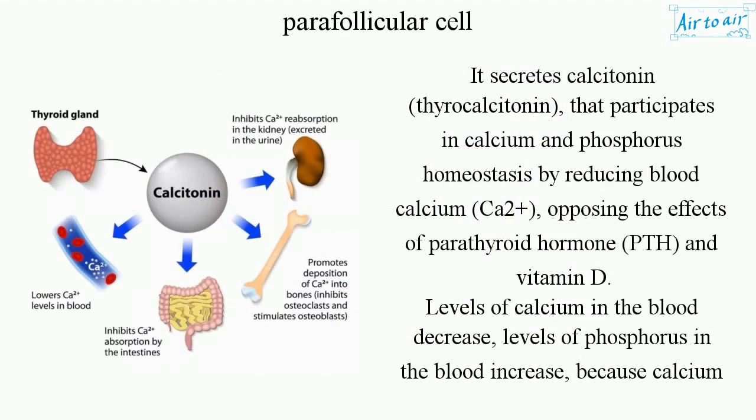It secretes calcitonin, thyrocalcitonin, that participates in calcium and phosphorus homeostasis by reducing blood calcium, Ca2+, opposing the effects of parathyroid hormone, PTH, and vitamin D.